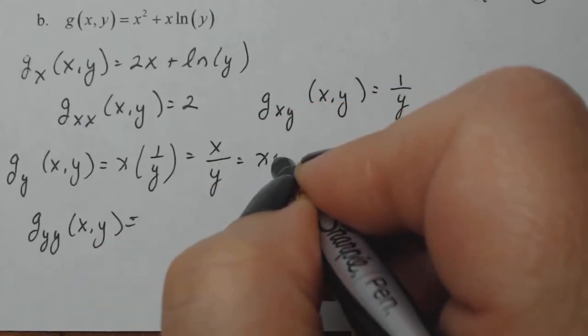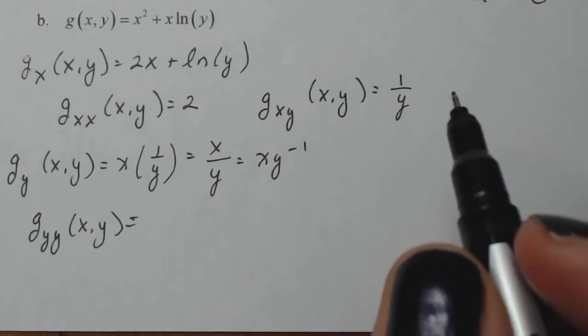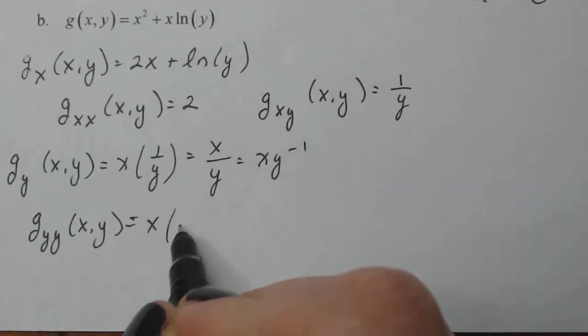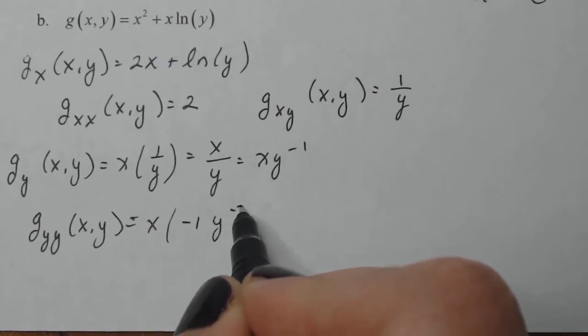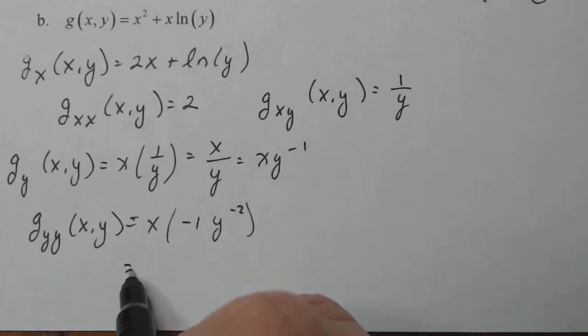I'm going to write this as x times y to the minus one. It helps take the derivative of that with respect to y. X is a constant, so it's going to be minus one y to the minus two. Bring down the power, subtract one from the old power. So that'll give me negative x over y squared.